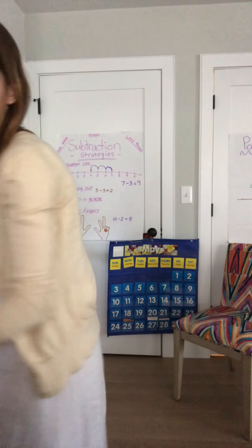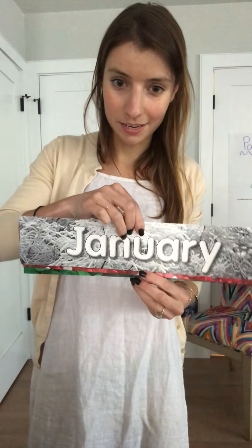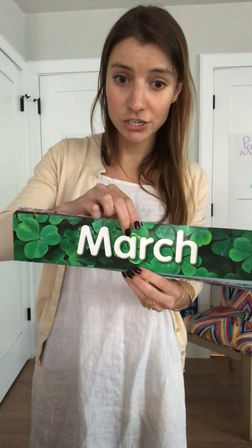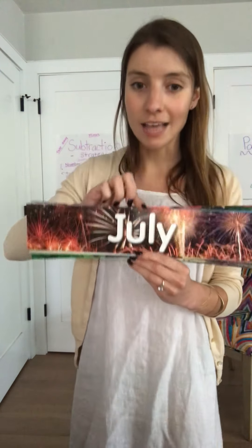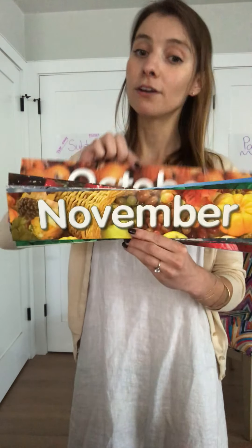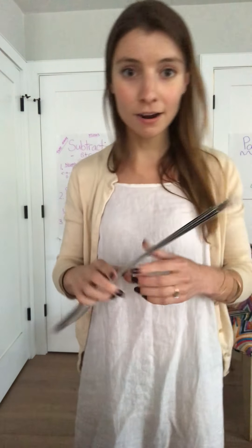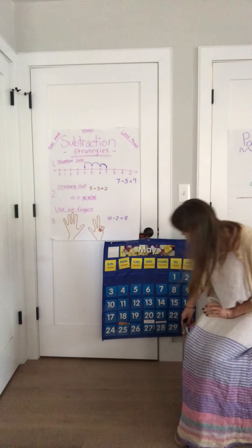Let's do our months of the year. Starting with — what's this one? January. Ready? January, February, March, and April, May, June, July, and August, September, October, November, December. These are the months of the year. And what month are we in now? The month of May — M-A-Y. May. All righty.